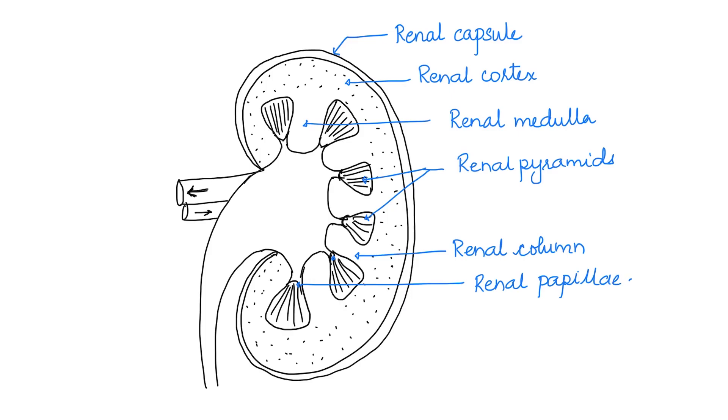These renal papillae open into the funnel-shaped part that forms the ureter. They open through small tubes which are called calyces.